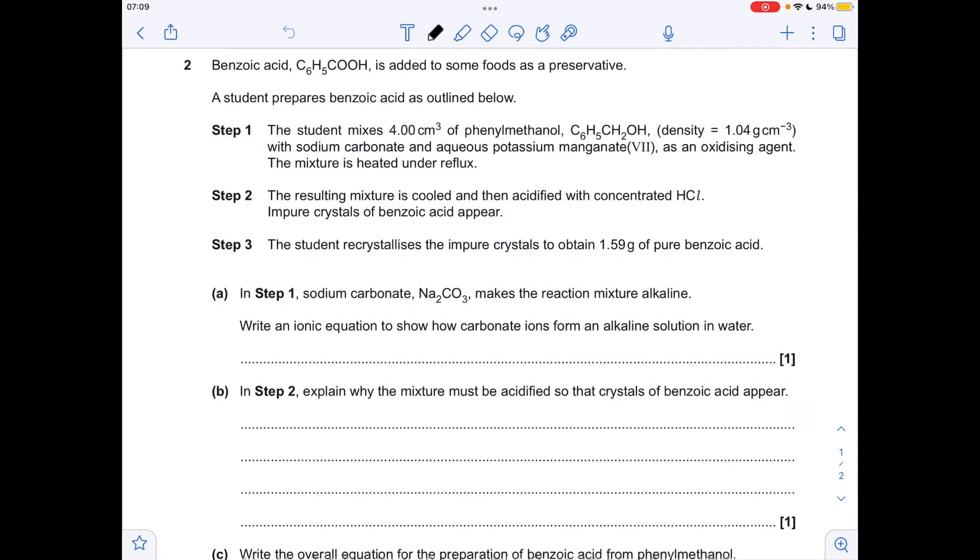Okay, so for part A we've got to write this ionic equation to show carbonate ions form an alkaline solution in water. The important thing is it's got to form an alkaline solution, so we've got to generate hydroxide ions. So if we take the carbonate ion and some water, there's the hydroxide ion, and what's left is a hydrogen carbonate ion.